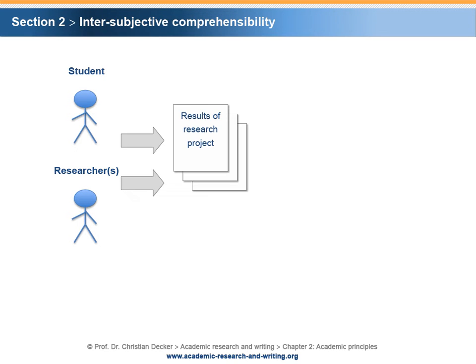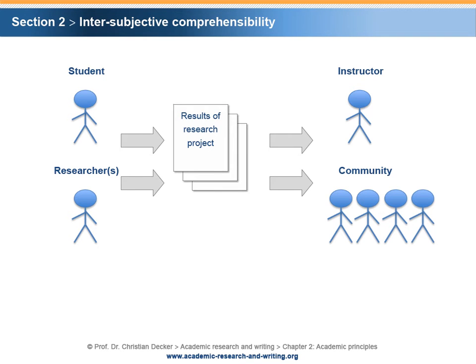In the context of scientific work, the words objective and objectivity are often used in order to qualify the research process and the research output. However, this wording is incorrect. Typically, a student or one or more researchers will generate results that stem from a student or an institutionalized research project. The recipients are, in the case of the student, the instructor, or in the case of the researchers, their research community and everyone else interested in the results. We should note that in both cases, one or more subjects present their findings to one or more subjects. Often, the idea is that a research project has been conducted with due diligence and objectiveness.